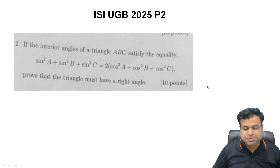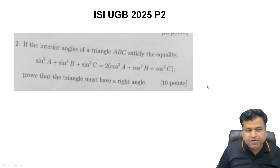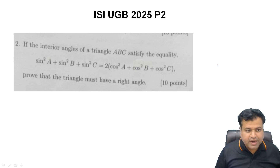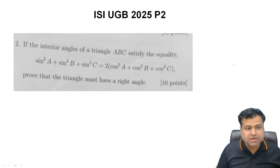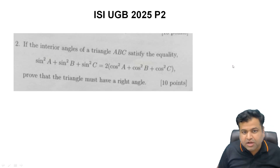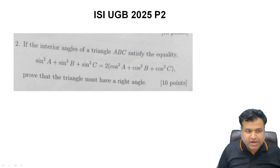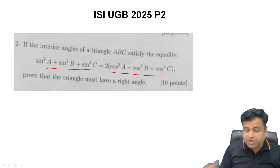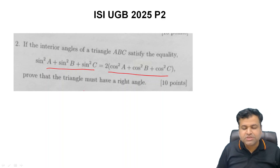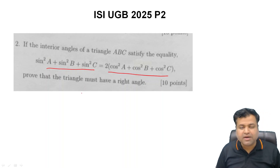Let's discuss Problem 2 of ISI UGB 2025. The problem states that in a triangle ABC, if the interior angles satisfy the equality sin²A + sin²B + sin²C = 2(cos²A + cos²B + cos²C), then we need to prove that the triangle must be a right-angle triangle.